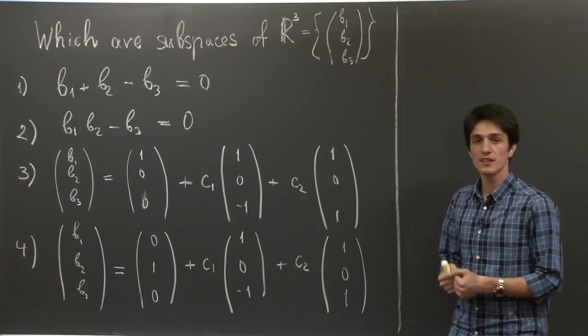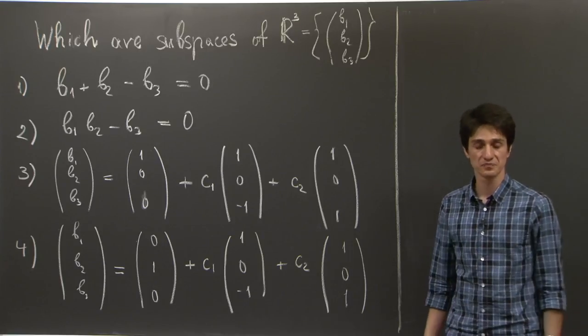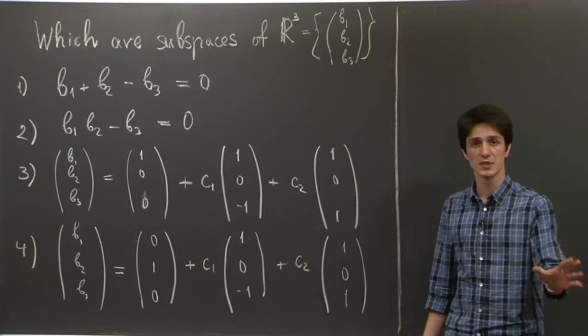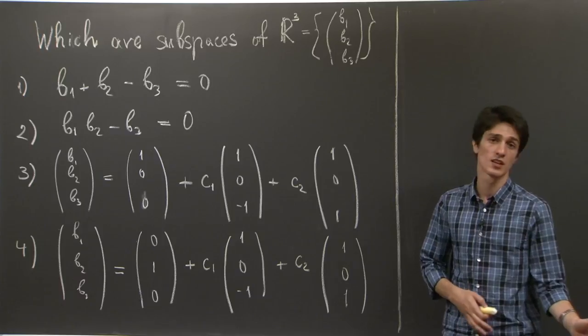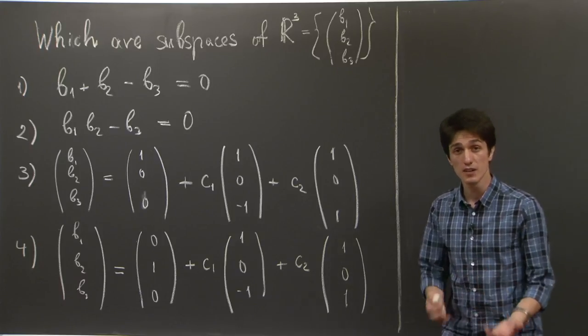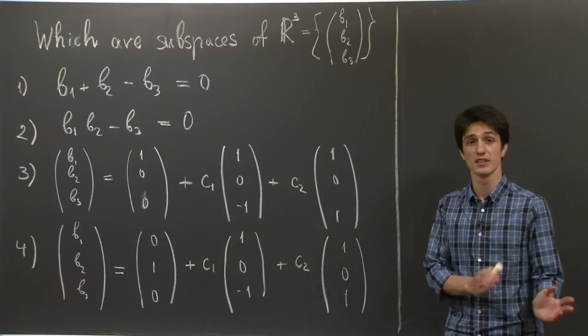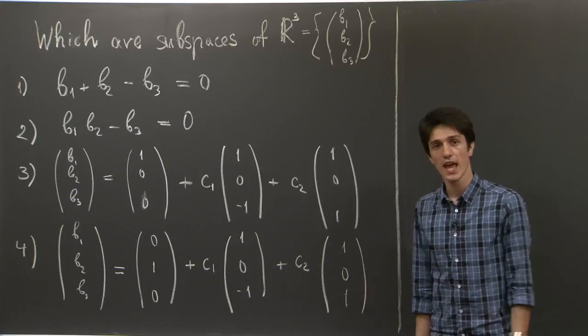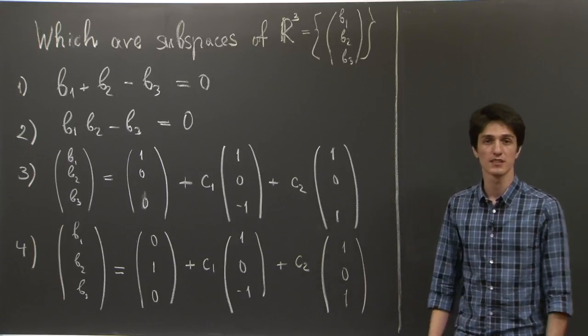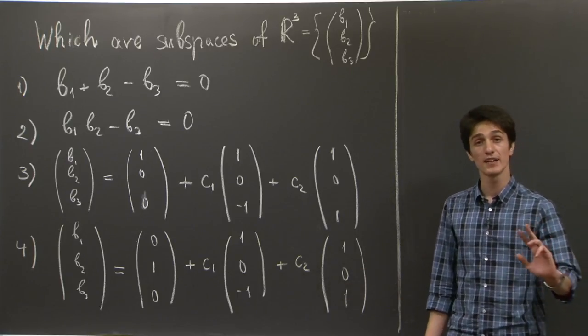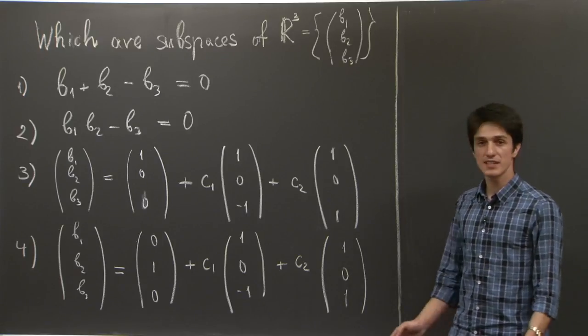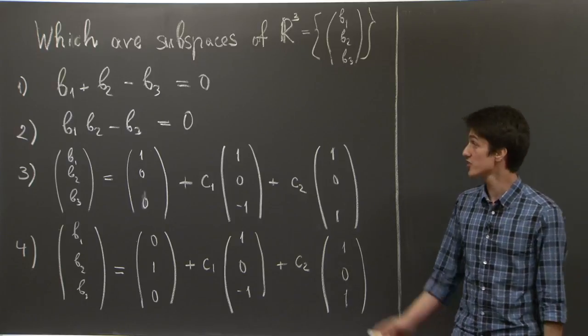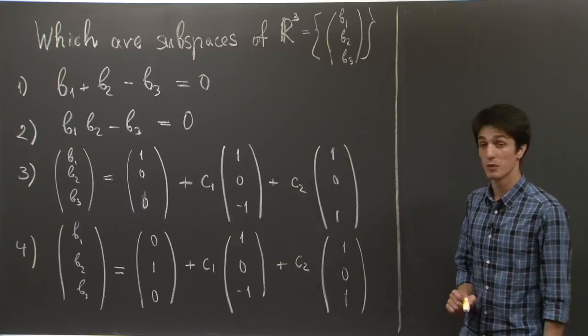And in class, Professor Strang showed you a few specific examples of subspaces which are related to matrices. One of them was the null space of a matrix, all the vectors that the matrix sends to 0. And the column space of a matrix, which is the span of the column of a matrix.